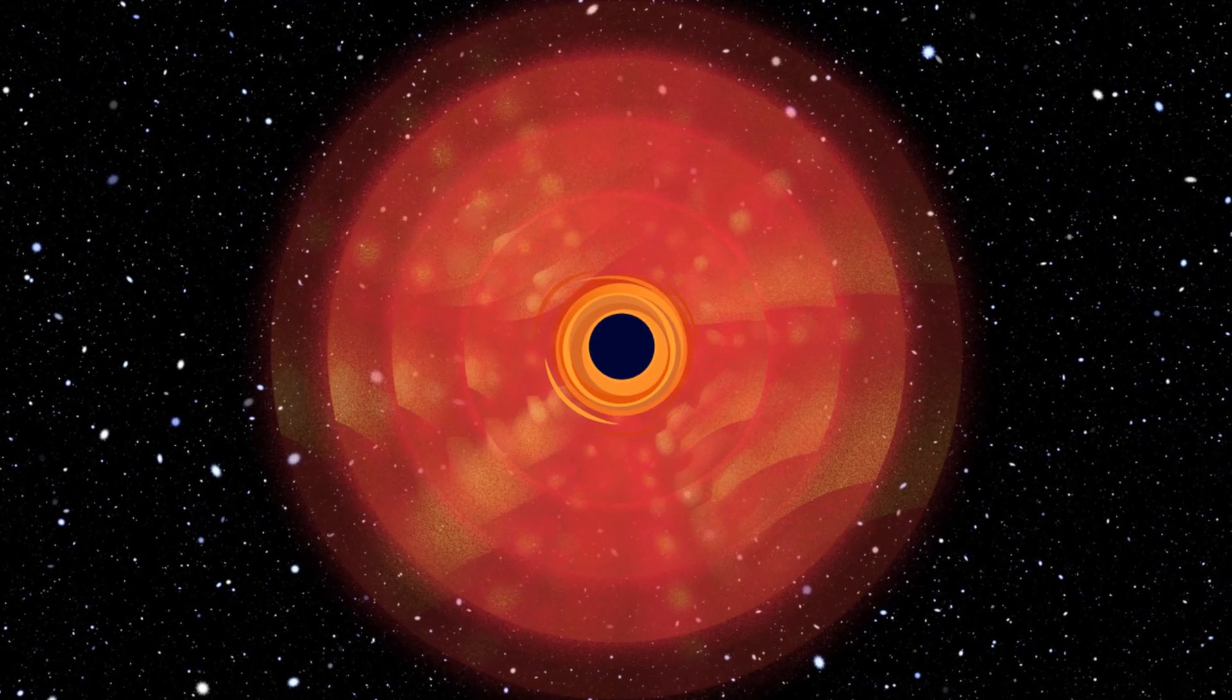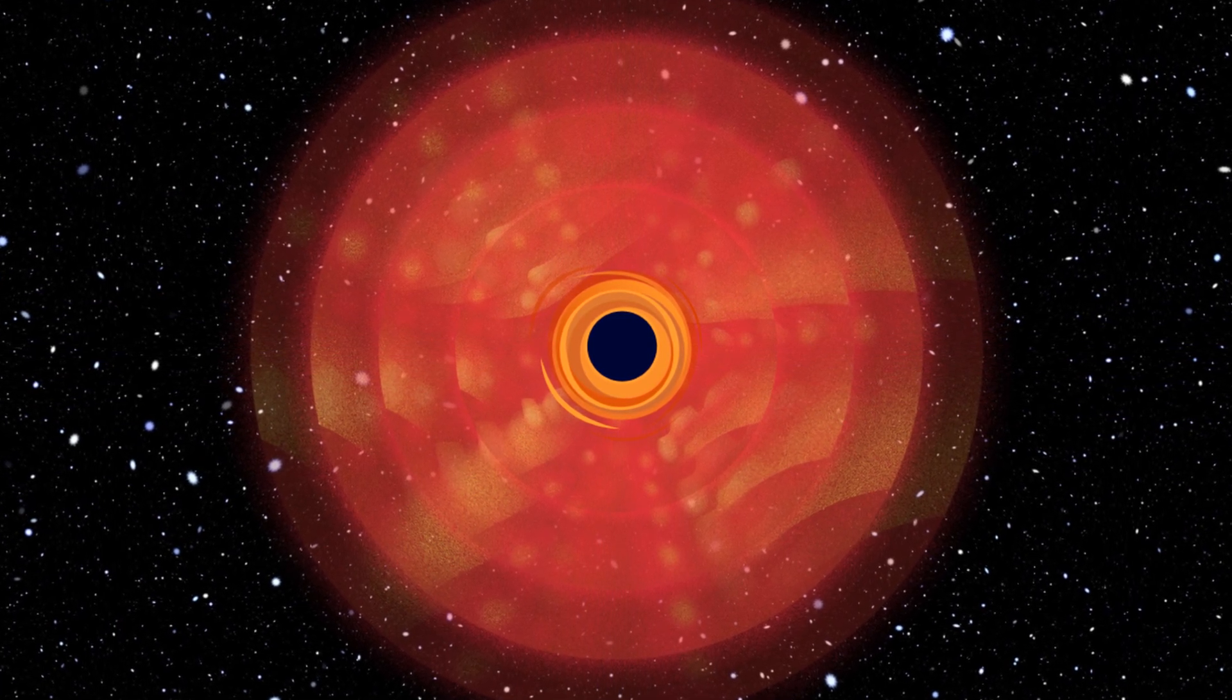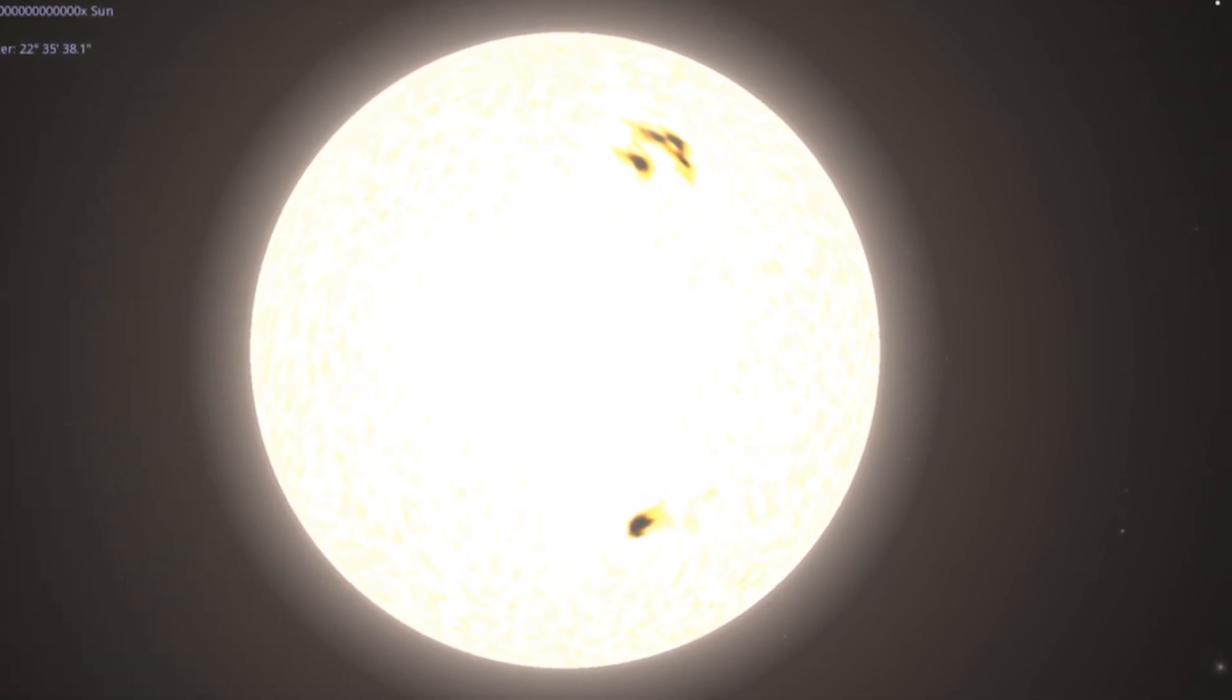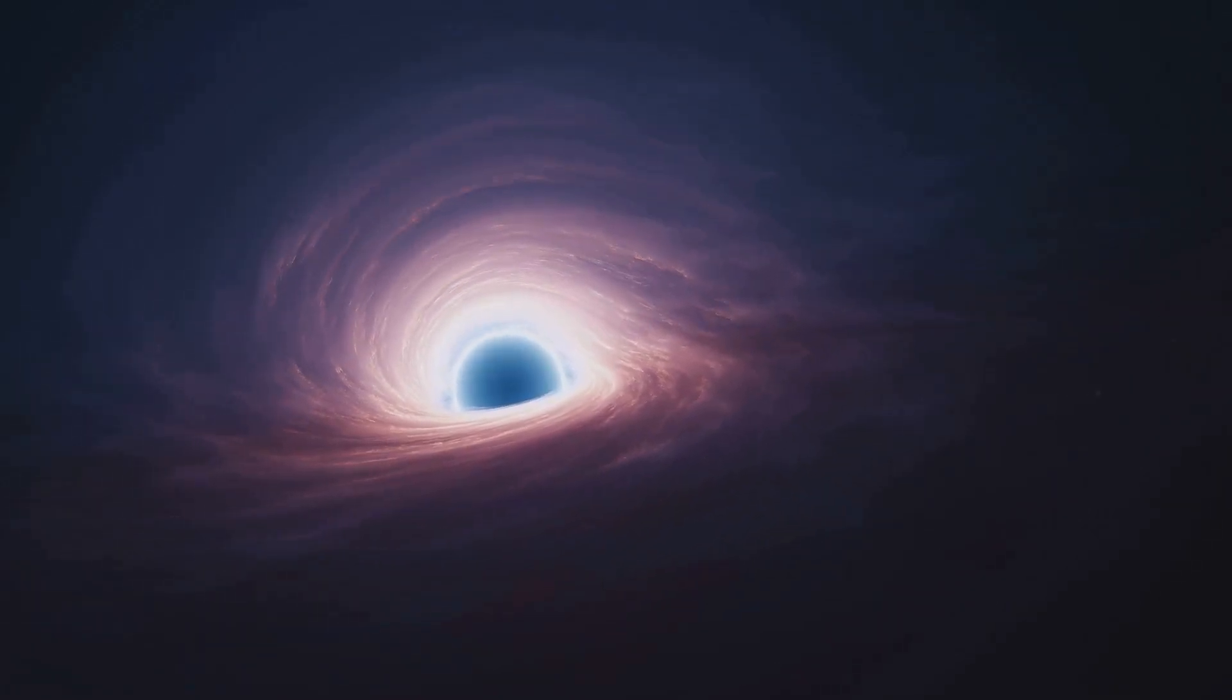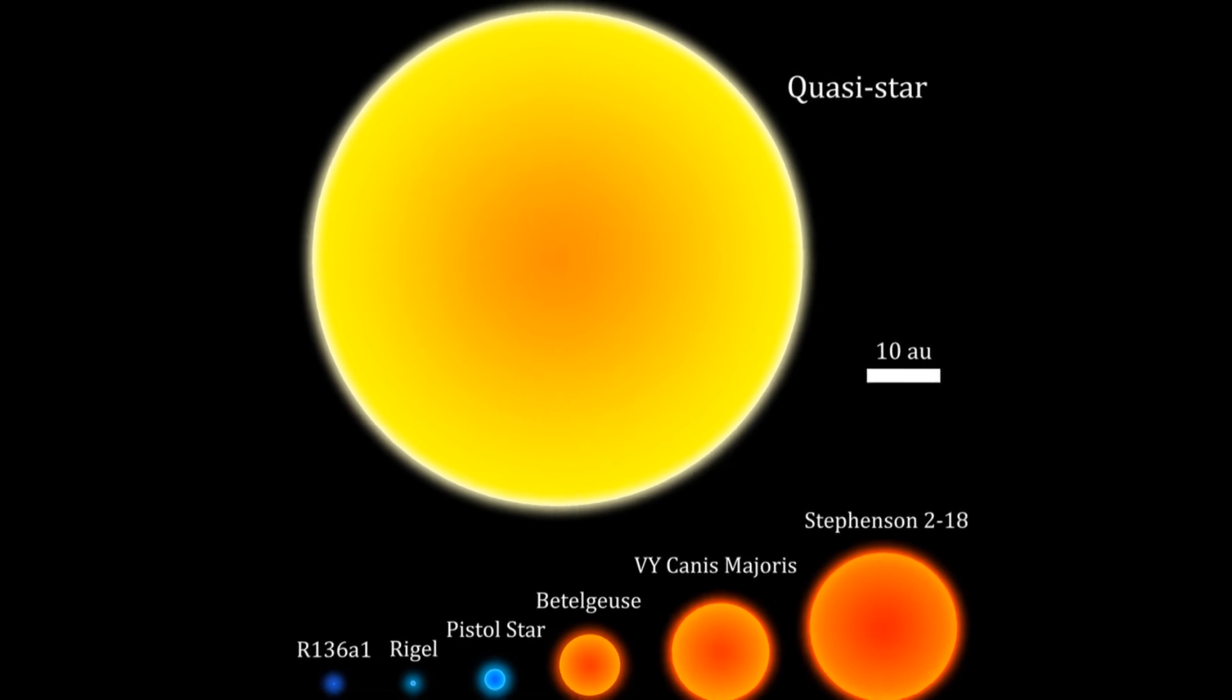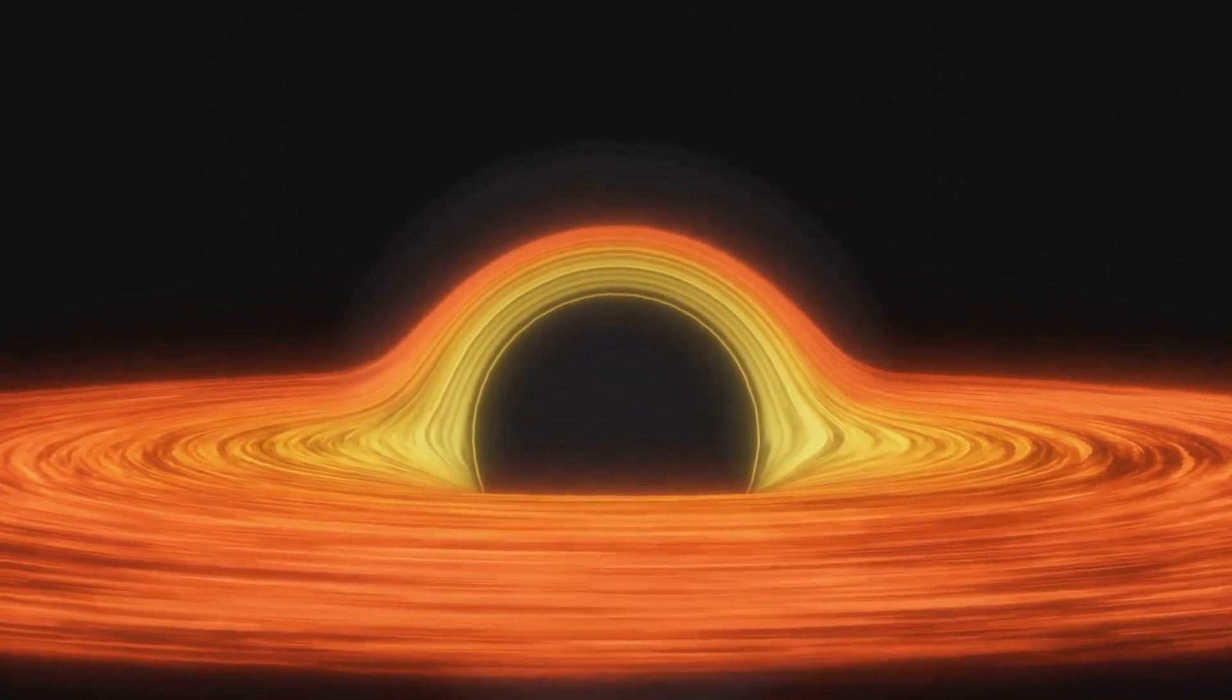The massive energy released by quasi-stars in their short, intense lives could have been a major driving force in the formation of supermassive black holes. These stars were not just feeding their black holes in the center, they were supercharged engines constantly churning out matter and energy, creating conditions that may have allowed these black holes to grow rapidly. While quasi-stars themselves didn't last long enough to be observed directly, the evidence we do have about the formation of supermassive black holes suggests that they could have played a crucial role in the early universe.